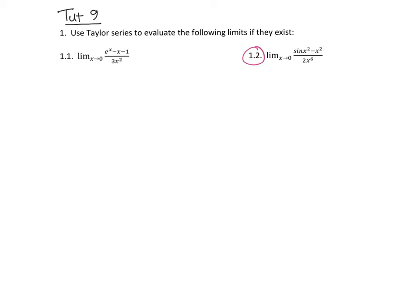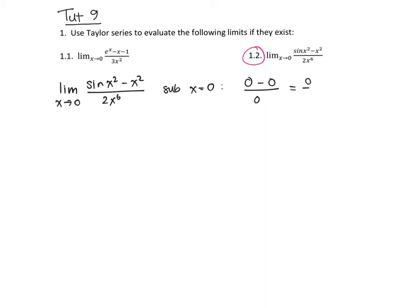If we start having a look at question 1.2, we've got the limit as x tends to zero of sine of x squared minus x squared over 2x to the sixth. If we substitute in x equals zero to see what happens, we get sine of zero is zero, minus zero, over zero.